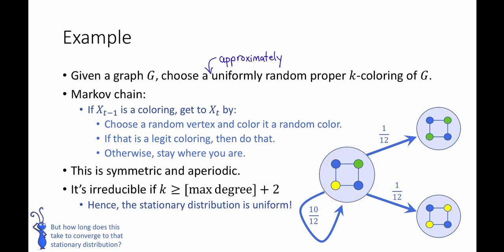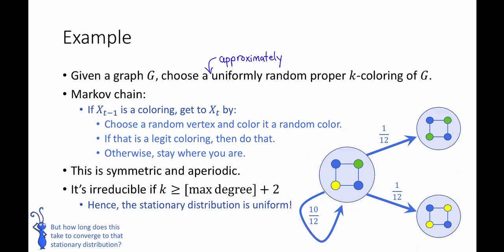So the choices coming out of a given state look like this. I claim that this Markov chain is symmetric, because the probability of picking a vertex and coloring it green equals the probability of picking that vertex and coloring it yellow. It's also aperiodic since it has self-loops. It turns out this chain is also irreducible, provided that the number of colors k is big enough — in particular, if k is greater than or equal to the maximum degree plus 2. Fun exercise: verify that.